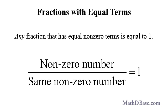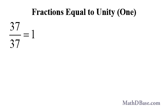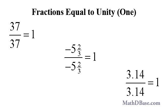Any fraction that has equal non-zero terms is equal to 1. For example, 37 over 37, negative 5 and 2 thirds over negative 5 and 2 thirds, and 3.14 over 3.14 are all equal to 1.